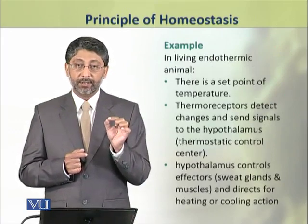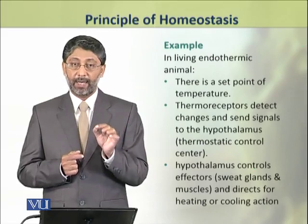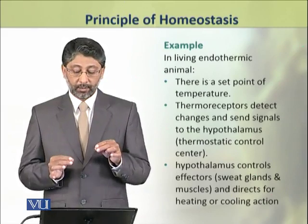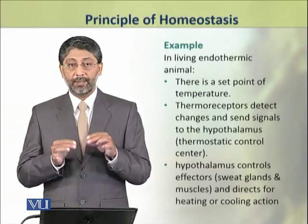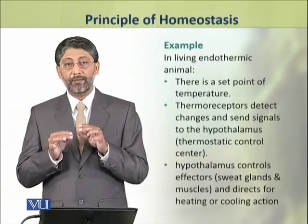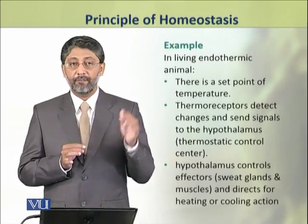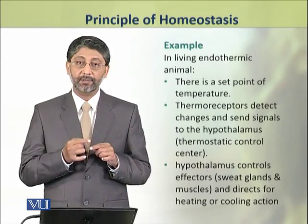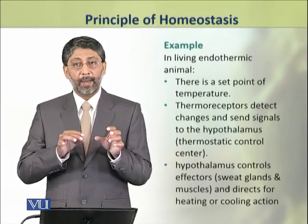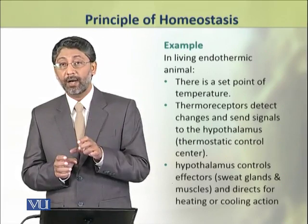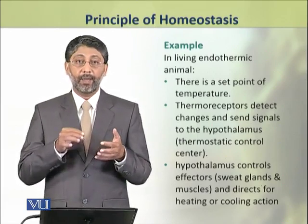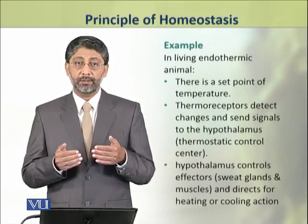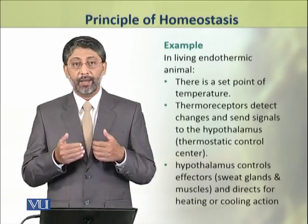A similar control system exists in endothermic animals. There is a set point of temperature. Thermoreceptors detect temperature changes and send signals to the control center, which is the hypothalamus in the brain. The hypothalamus sends appropriate messages to the effector organs, which are sweat glands and muscles, causing perspiration or shivering, and as a result the required level of temperature is maintained.